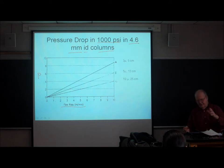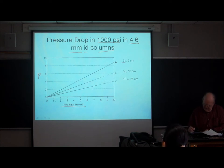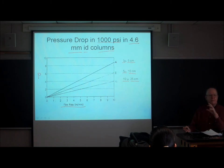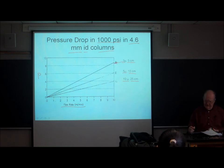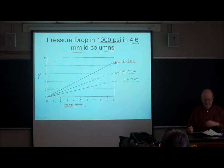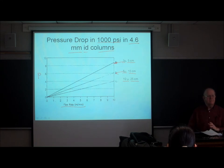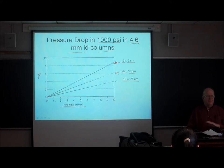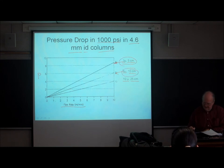The pressure drop for the smaller particles is much higher even though the column is shorter. Why would we do this? It's all about time — the 3 micron column is about twice as fast as the 5 micron, and the 5 micron is about twice as fast as the 10 micron. The 1.8 micron columns, typically 30 mm long, are about twice as fast as the 3 micron columns.